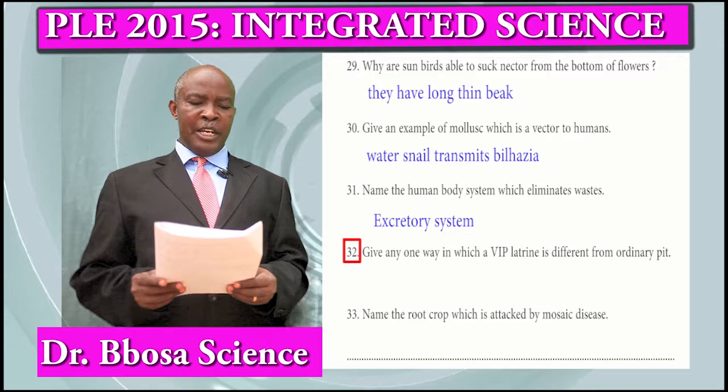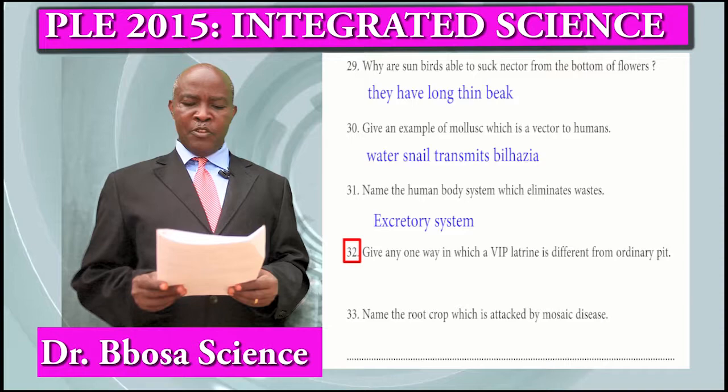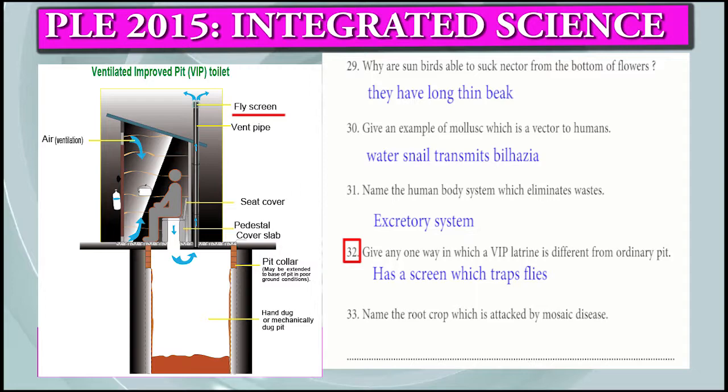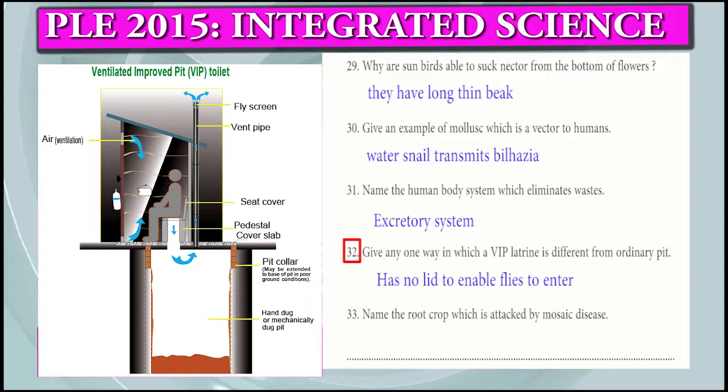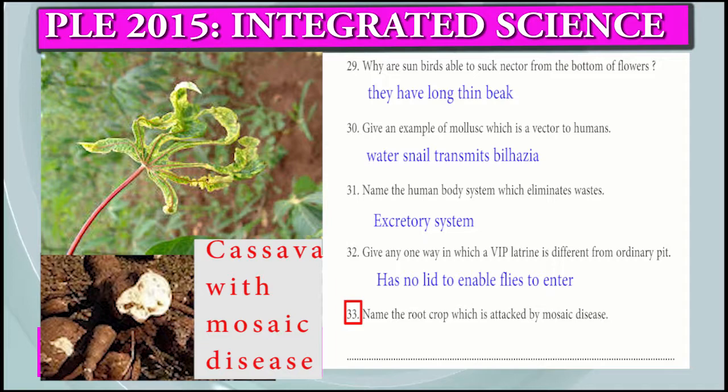Question 32: Give one way in which a VIP latrine is different from an ordinary pit latrine. It has a screen which traps flies. It has a vent which removes bad air.